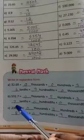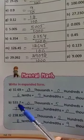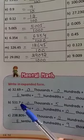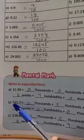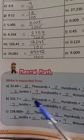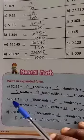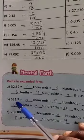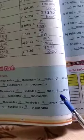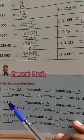Next, b is 531.7. So ones, tens, hundreds. Thousands place is 0, hundreds place is 5, tens place is 3, ones place is 1. So 500, 30, 1.